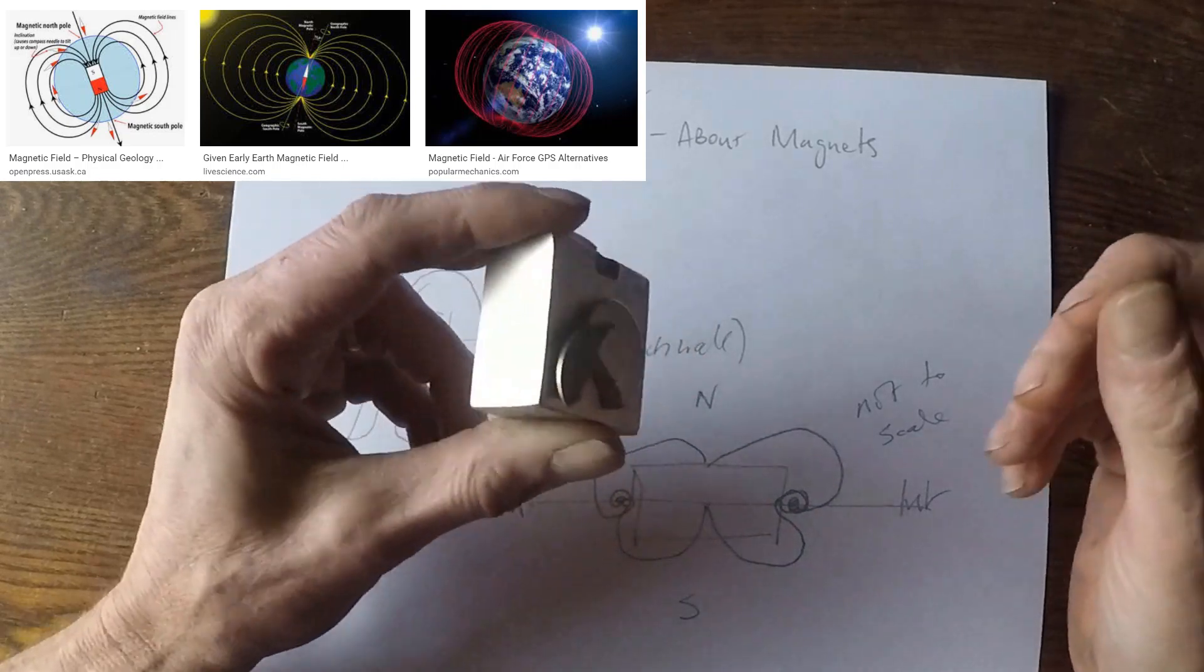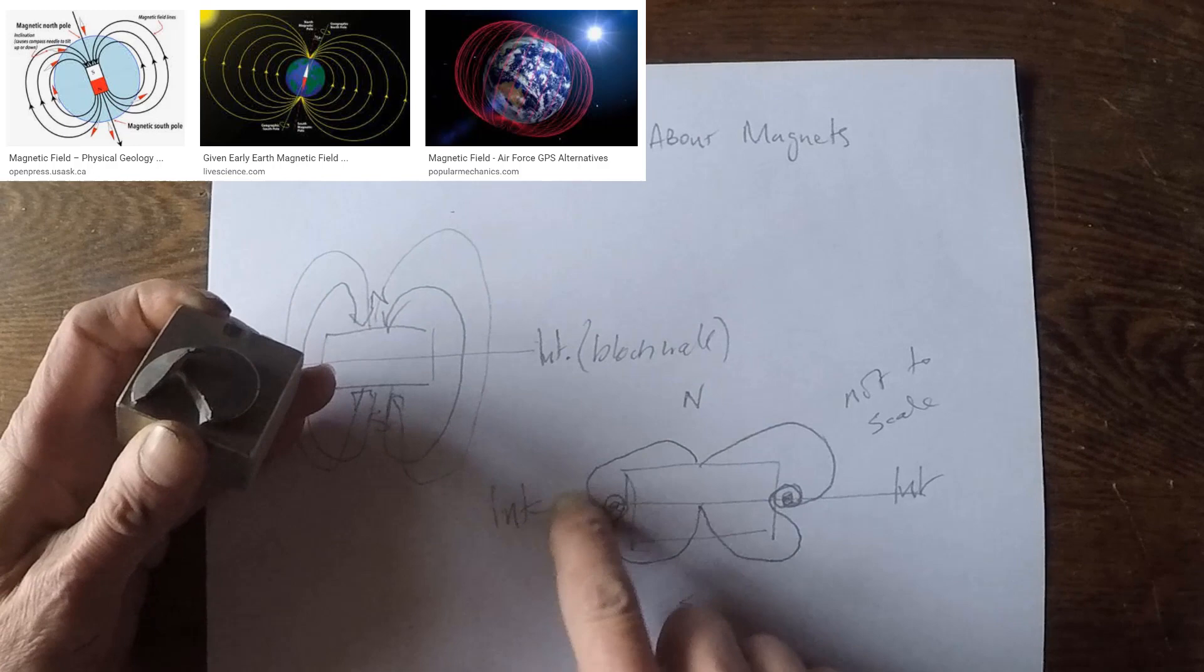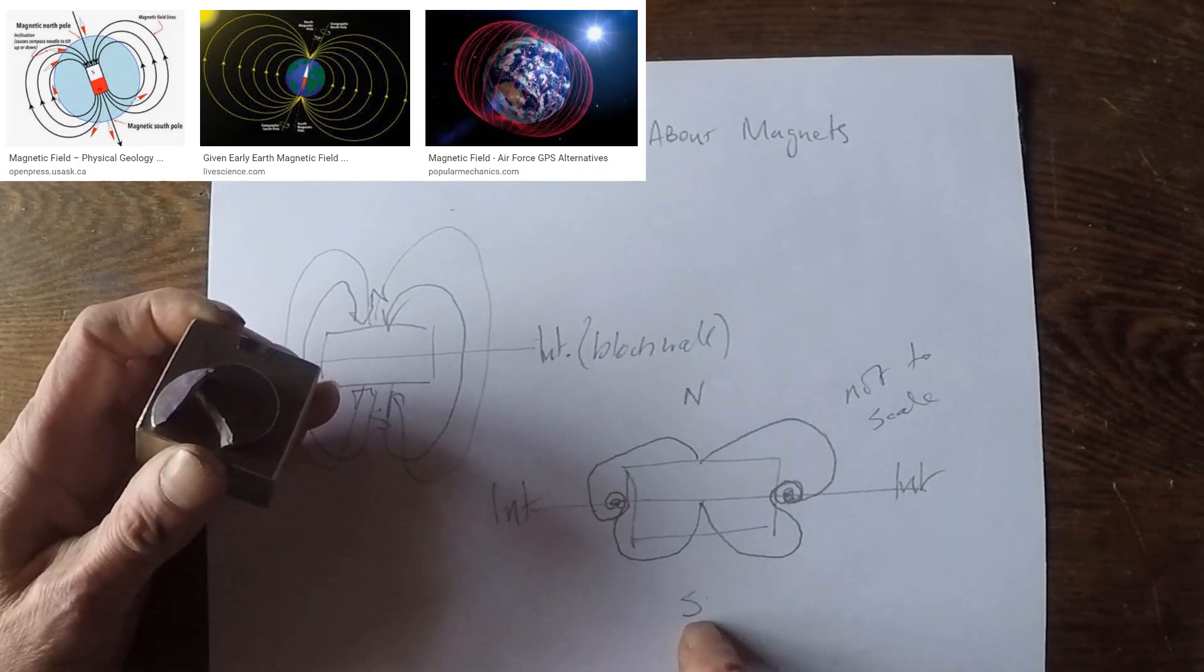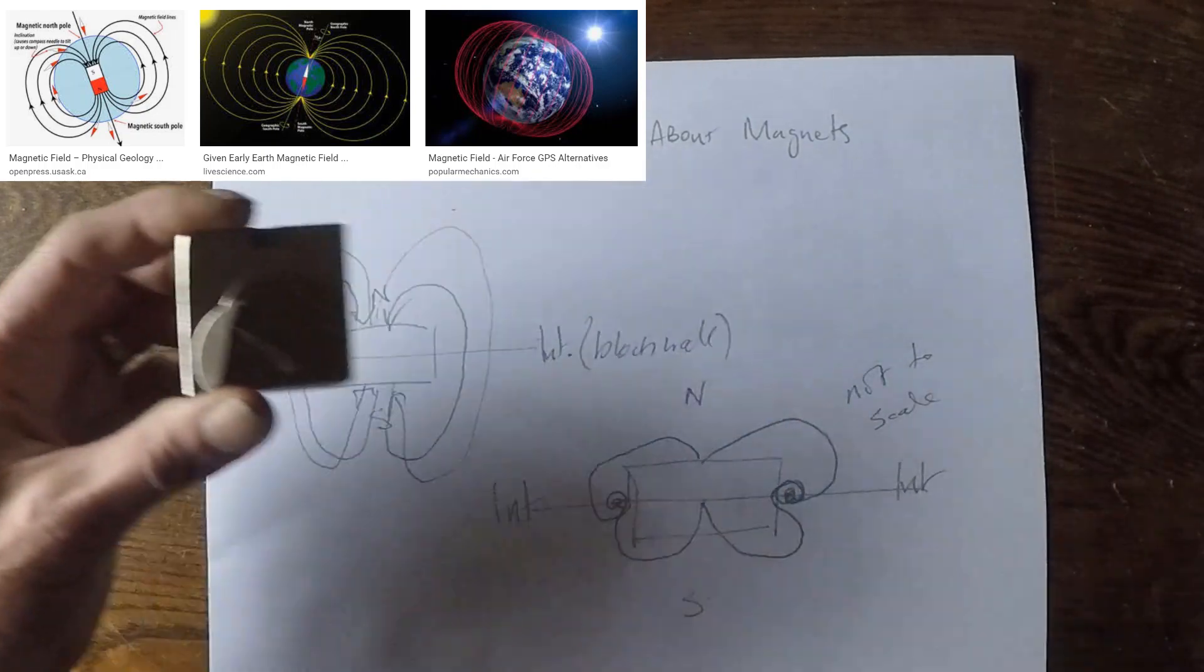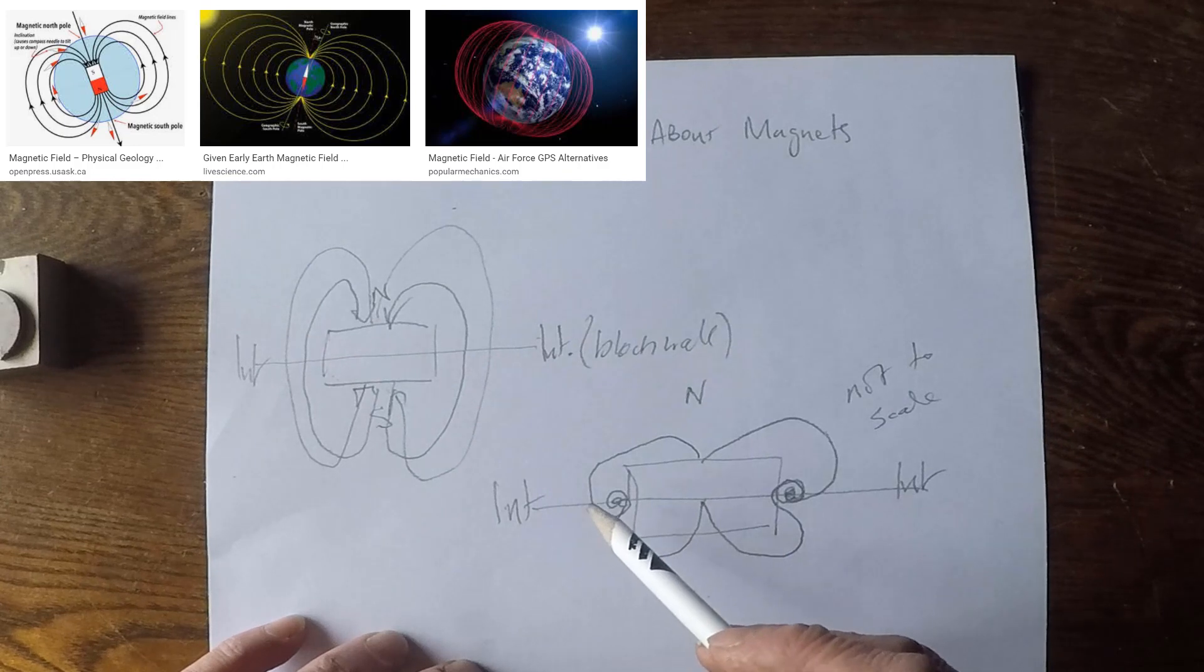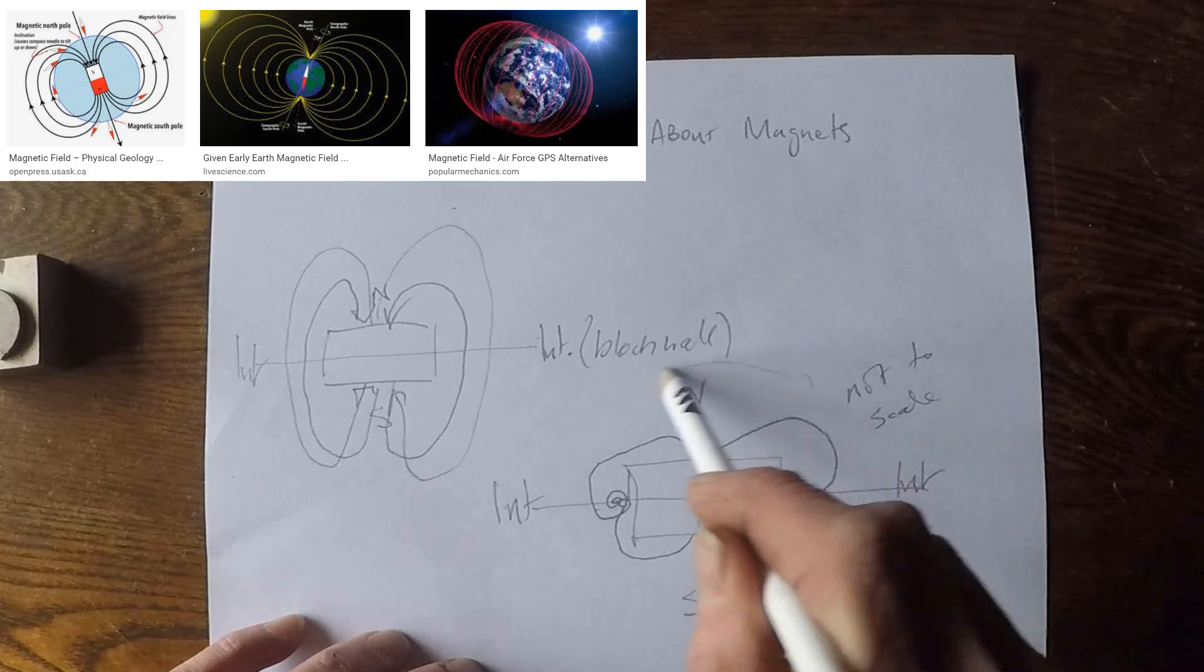It broke my magnet, but I don't care. That's an easy example. The south field can't bypass the north field. The north field and the south field are attracted to each other, as I just proved. So, there is no logical way this south field can bypass the north field and go into the north. It must do this.